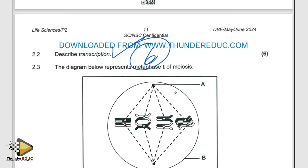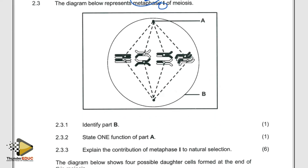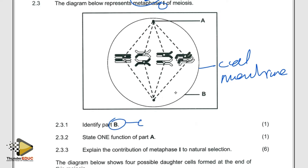The next question says the diagram represents metaphase one of meiosis. Identify molecule B. I told you that when the cell is in metaphase or anaphase, we don't have a nuclear membrane — we only have the cell membrane. So the answer here is the cell membrane.